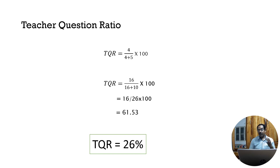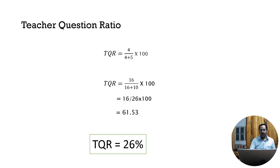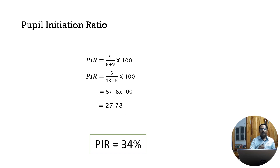Teacher question ratio (TQR): taking categories 4 and 5 (questioning and lecturing), TQR equals the tally in category 4 divided by the sum of categories 4 and 5, multiplied by 100. In our example it is 61.53%. Flanders says 21% is the better normative value for teacher question ratio. For pupil initiation ratio (PAR), there are two student categories: category 8 is student response when the teacher questions, and category 9 is when the student responds spontaneously.